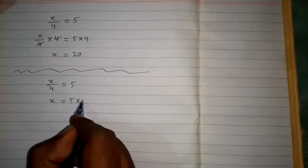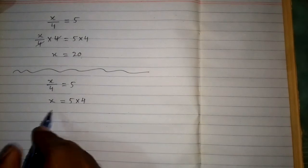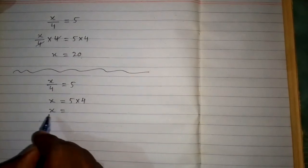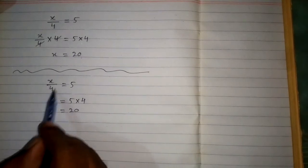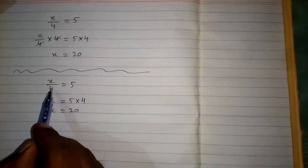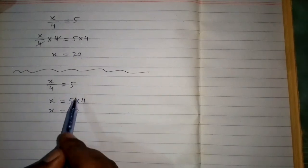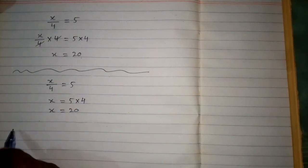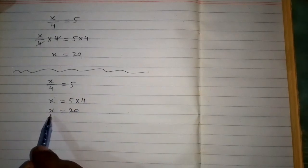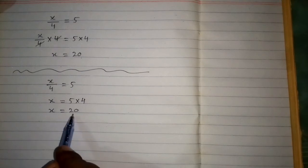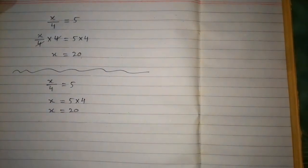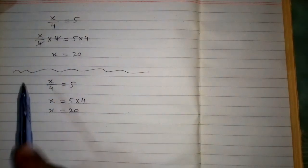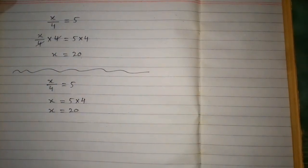If we take this 4 on the other side of the equation, then this 4 will be multiplied by 5. So we have x is equal to 5 multiplied by 4, which is 20. So the division on one side can become multiplication on the other side of the equation. So again we have the value of x is equal to 20, and both values are the same. So we can use either method — we have a choice.